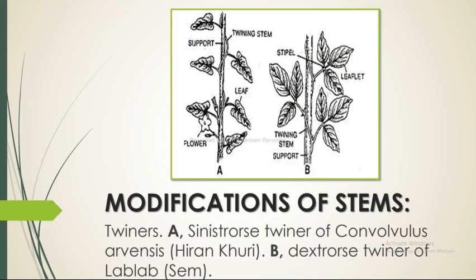In figure A, this is the sinistrorse dextrorse twiner of Convolvulus arvensis, also known in vernacular name as herankori, which includes the twining stem, support, leaf, and flower. In figure B, this is the dextrorse twiner of Lablab, which includes the stipule, leaflet, twining stem, and support, as shown in the figure.